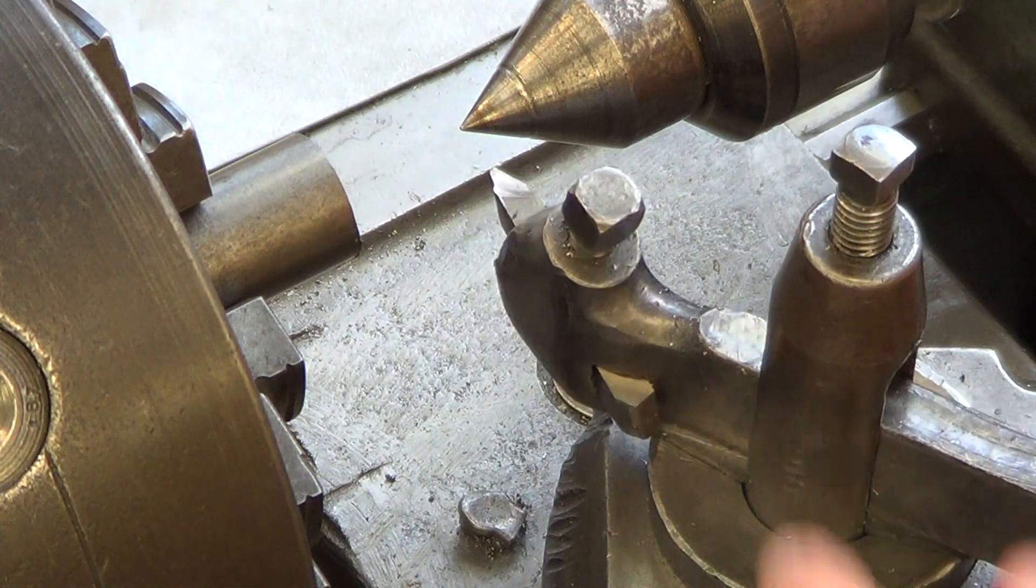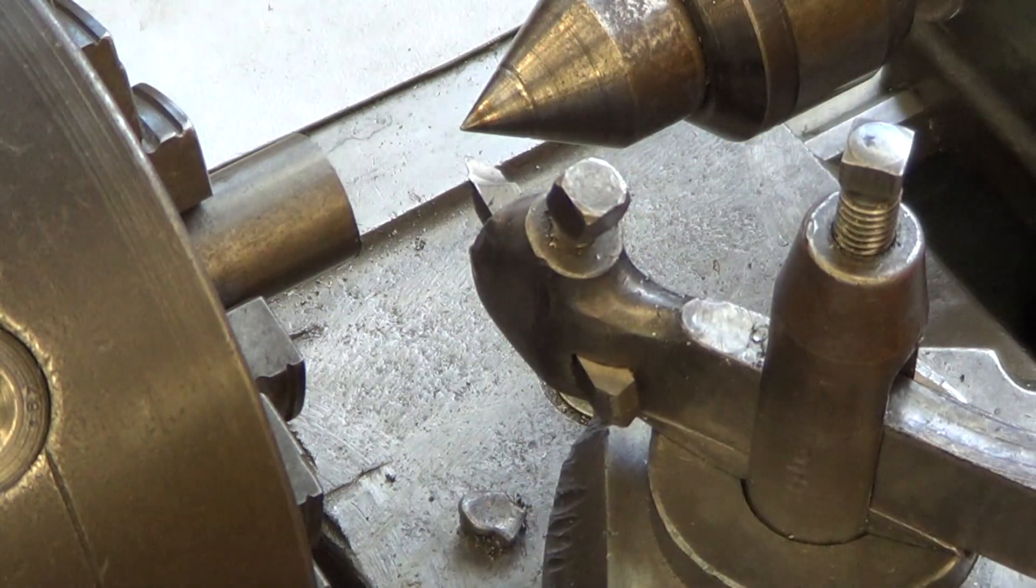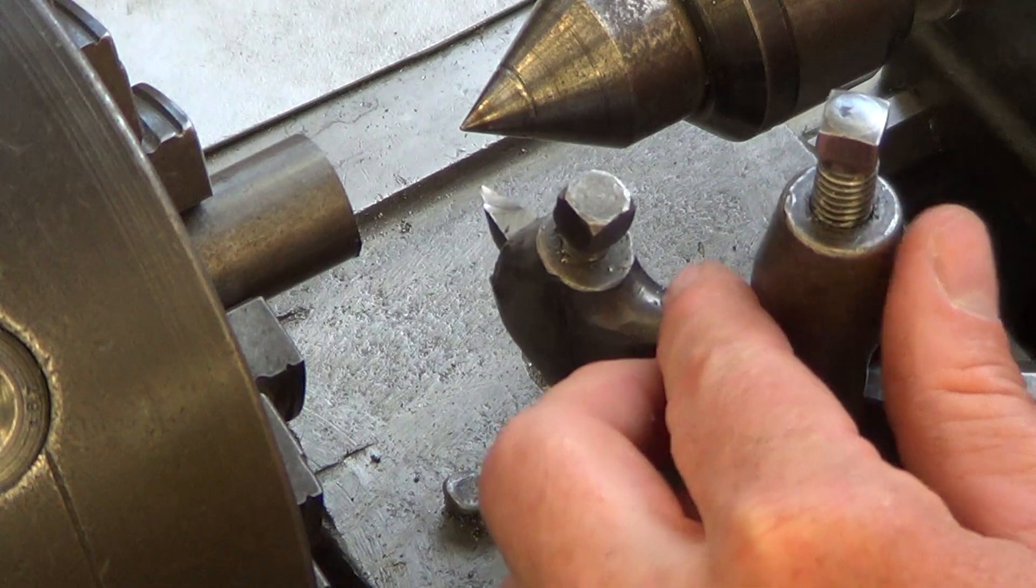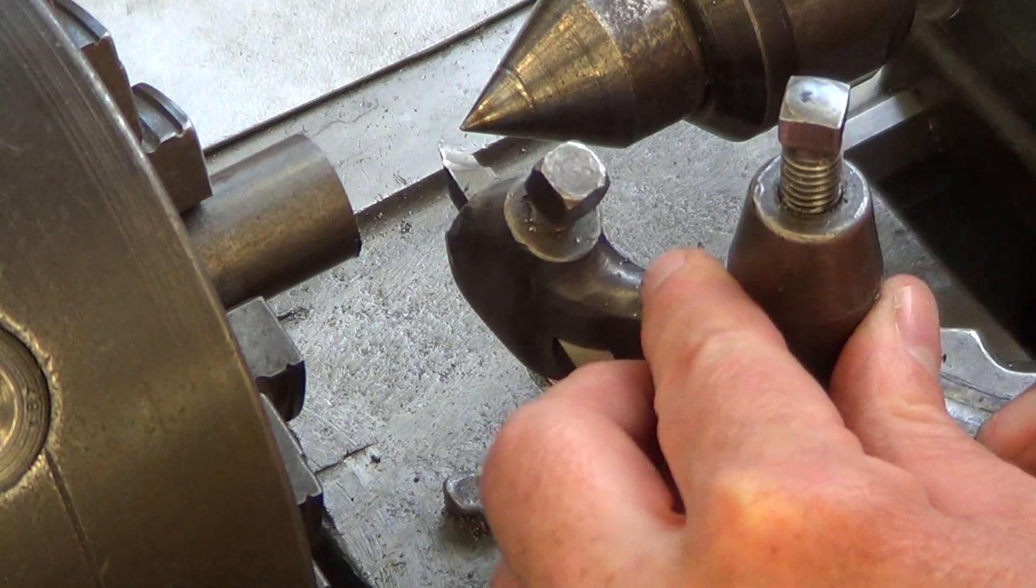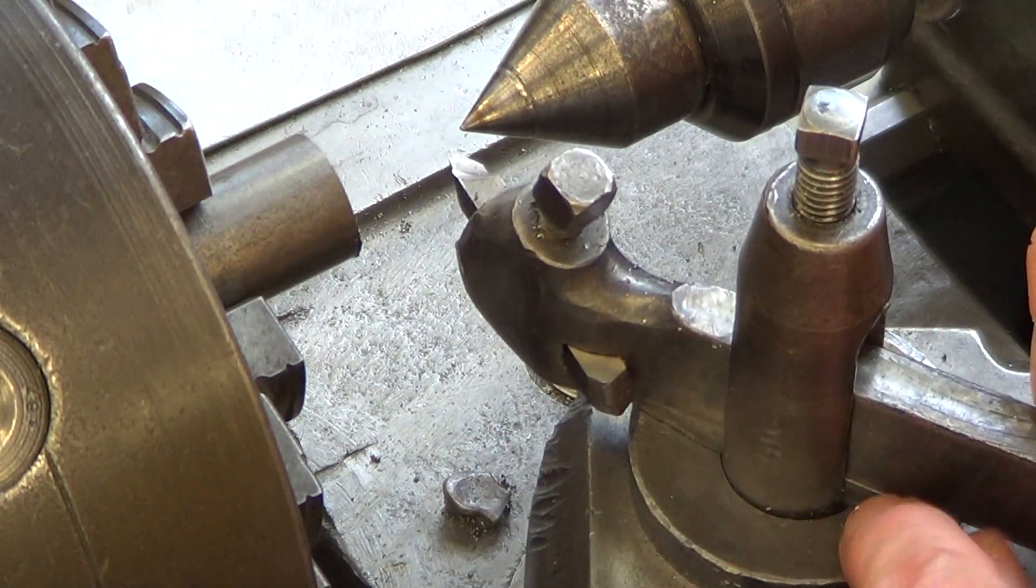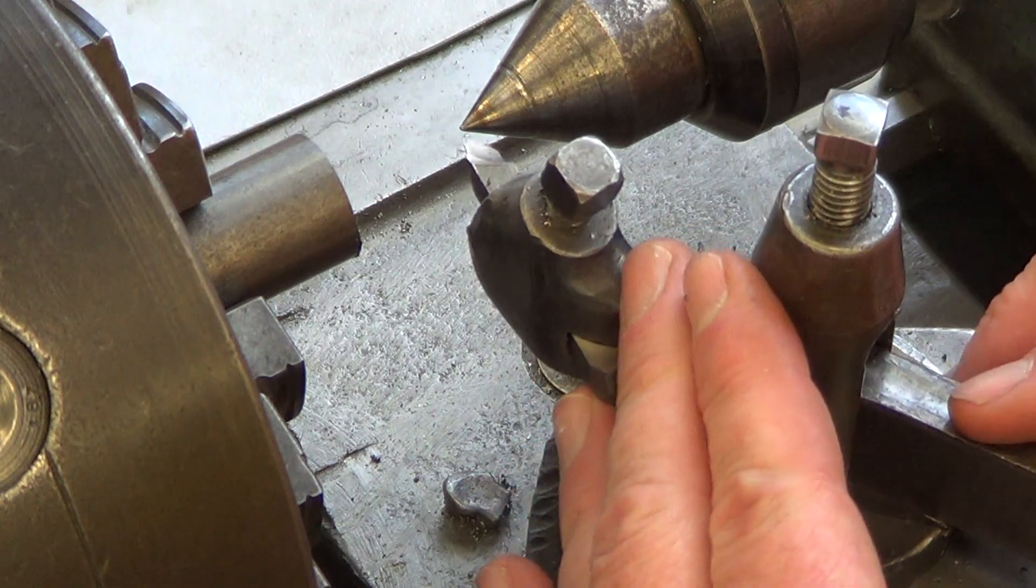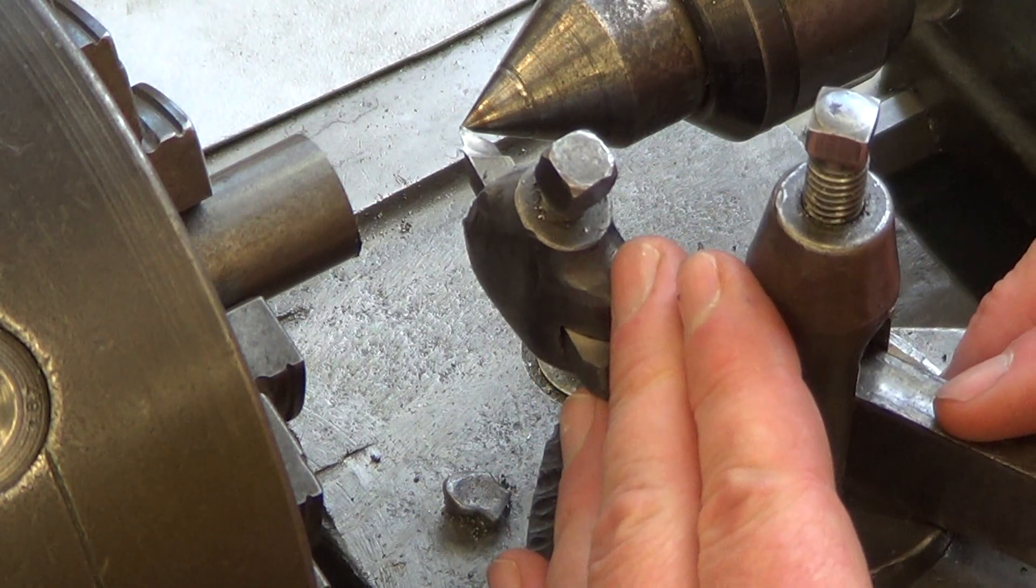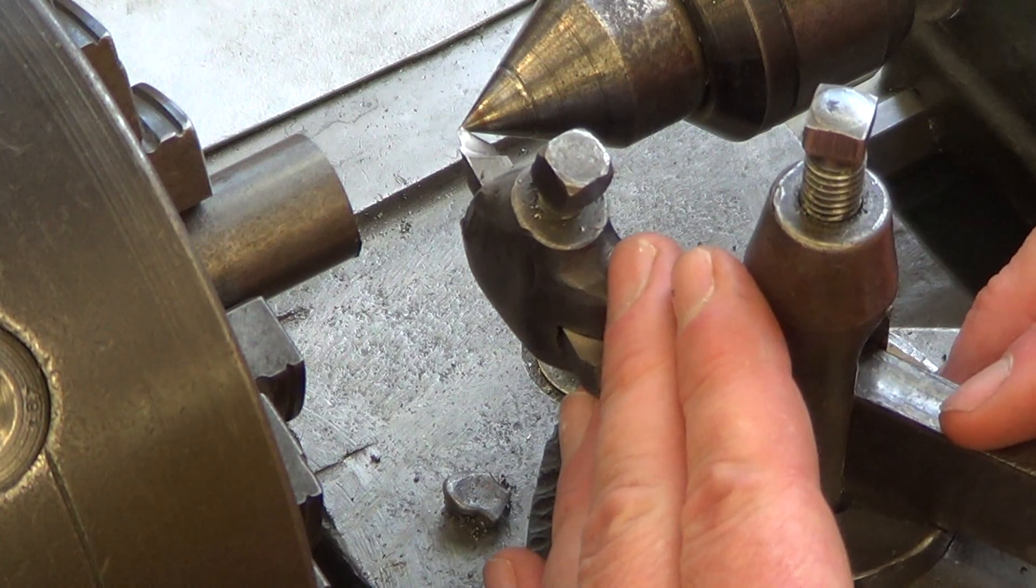So what we do is loosen off the cutter and bring it in. The cutter rolls up and down by rolling on a half-moon shaped piece that's down underneath here. We want to set the cutter nose directly at center first.